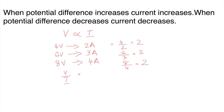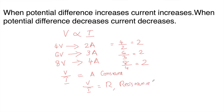The ratio V/I is always constant in a circuit. We represent this constant as R, which is resistance. A German physicist named Georg Simon Ohm discovered this relationship between potential difference and current, which is why V/I = R is known as Ohm's law.